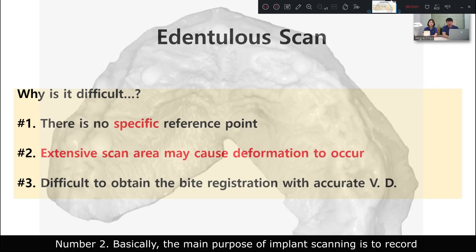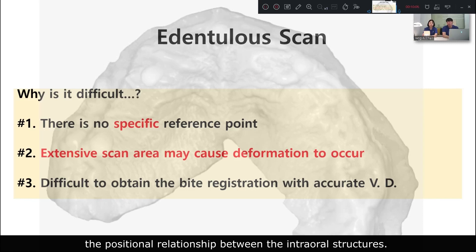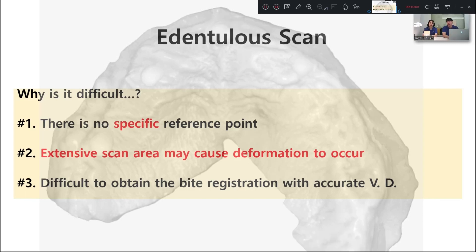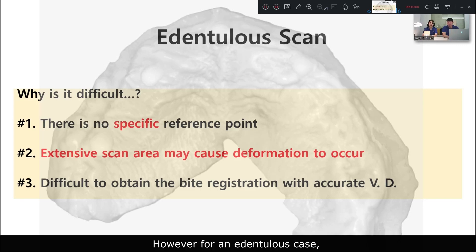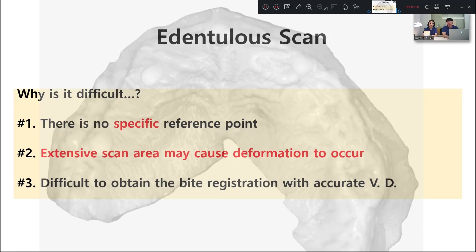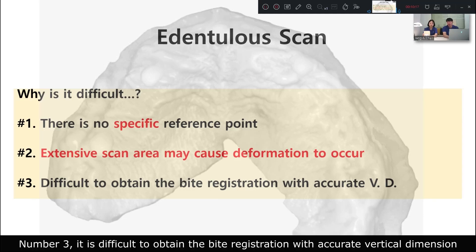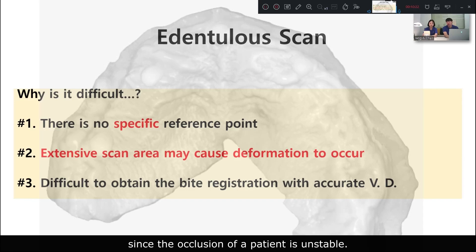Second, the main purpose of implant scanning is to record the positional relationship between the installed structures. However, the scanning area is too extensive, which may cause deformation. Third, it's difficult to obtain bite registration with accurate vertical dimension, since the occlusion of the patient is unstable.